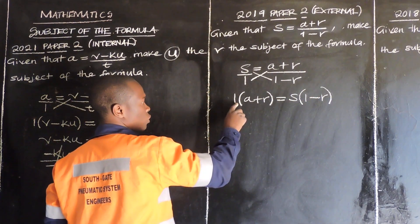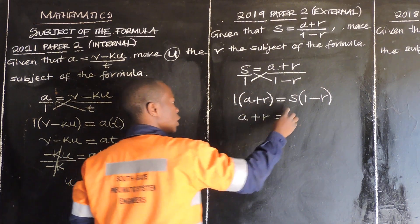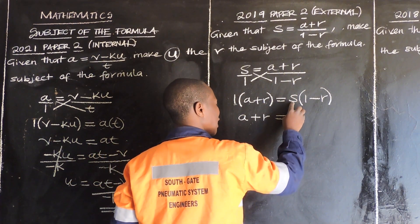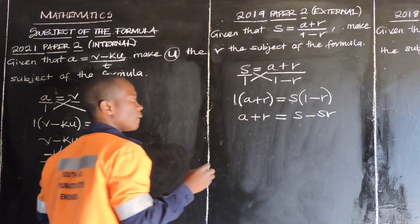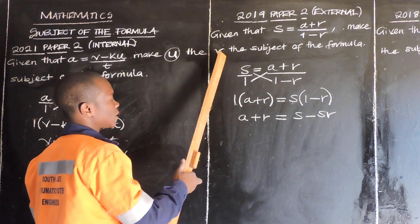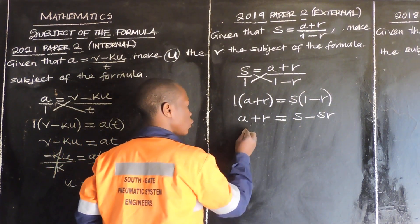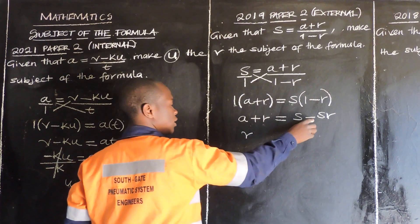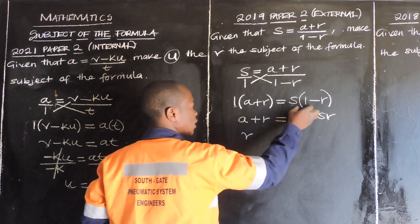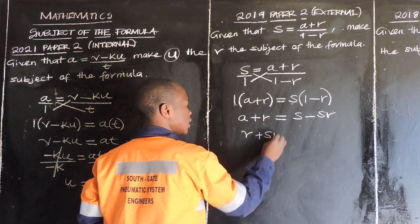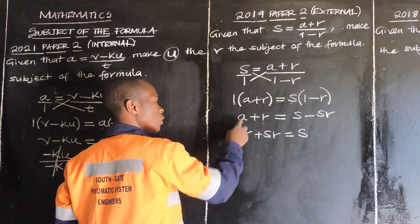So 1 times A gets A, plus 1 times R gets R, is equal to S times 1 gets S, then S times negative R gets negative SR. Since we are making R the subject of the formula, we are supposed to group the R terms together. This one is R, and this one is negative SR. So we are going to transpose: positive SR goes to the left, and A, which has no R, goes to the right side.